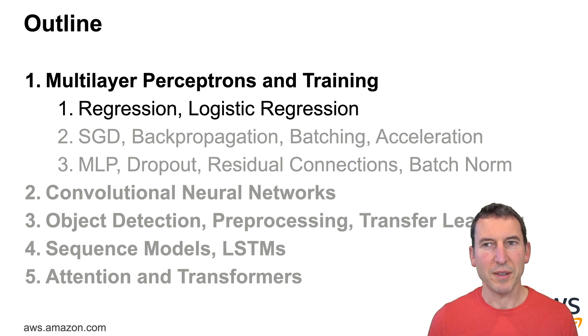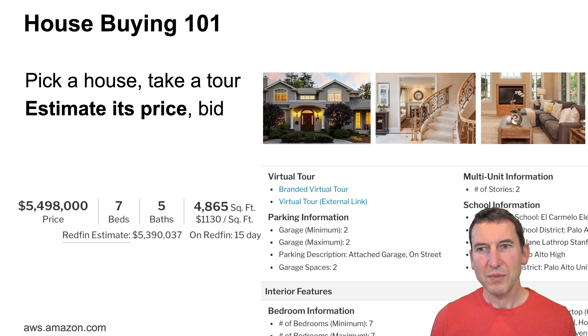Let's start out with the very basics namely MLPs and we'll start with a very classical subject namely regression and logistic regression. So let's say we want to buy a house, you might go and find a house that you fancy, take a tour and then estimate its price and bid.